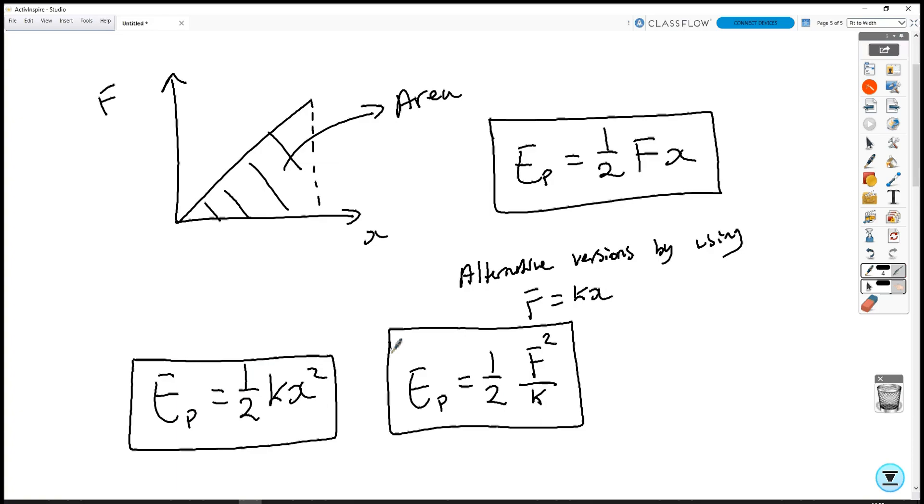Now, if we load a spring, it follows the line of that graph. So it goes up as a straight line. If we unload the spring, so we take the masses off, it goes back in that straight line, back until it reaches zero when it's fully unloaded. Now, some materials don't behave like this. For example, rubber bands, when you load them and unload them, they don't follow the same line.